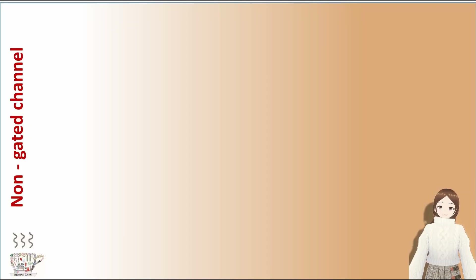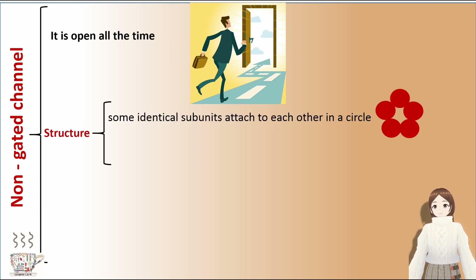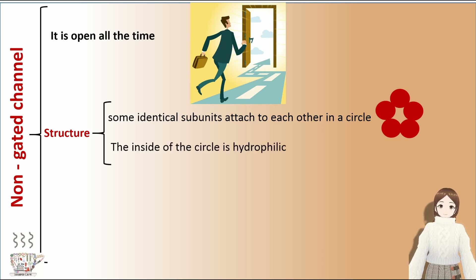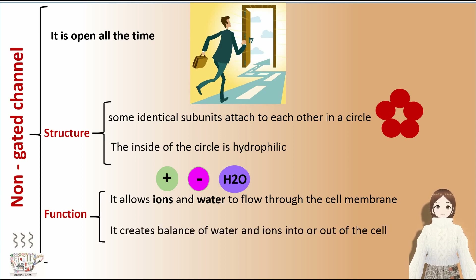Non-gated channels. This group is open all the time. In its structure, some identical subunits attach to each other in a circle, and the inside of the circle is hydrophilic. Its function: it allows ions and water to flow through the cell membrane, and it creates a balance of water and ions into or out of the cell.